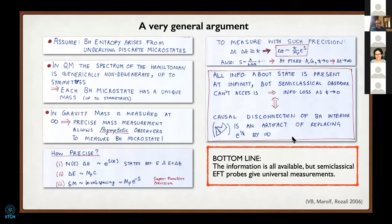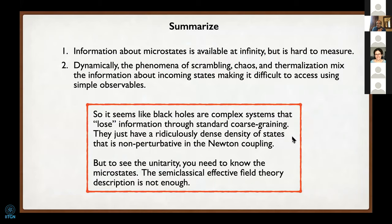To summarize: the information is available, so in some sense we know the thing is unitary, but it's hard to measure. There's also the further complication of dynamics—scrambling, chaos, and thermalization—which mixes the information about incoming states, making it even more difficult to access using simple observables. So black holes are like standard complex systems: they lose information through coarse graining, but have a ridiculously dense density of states that is non-perturbative in Newton coupling.